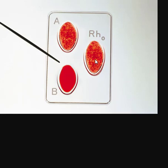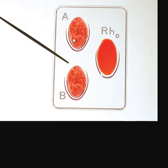You also have to check whether the rhesus monkey factor clumped. Most people are RH positive. There are very few people who are RH negative, but those people — especially females — have a problem: if they get pregnant by an RH positive man, there's a possibility she could attack her baby in the womb. Here's another example where A clumped and B clumped, but RH did not — so this person is AB negative.